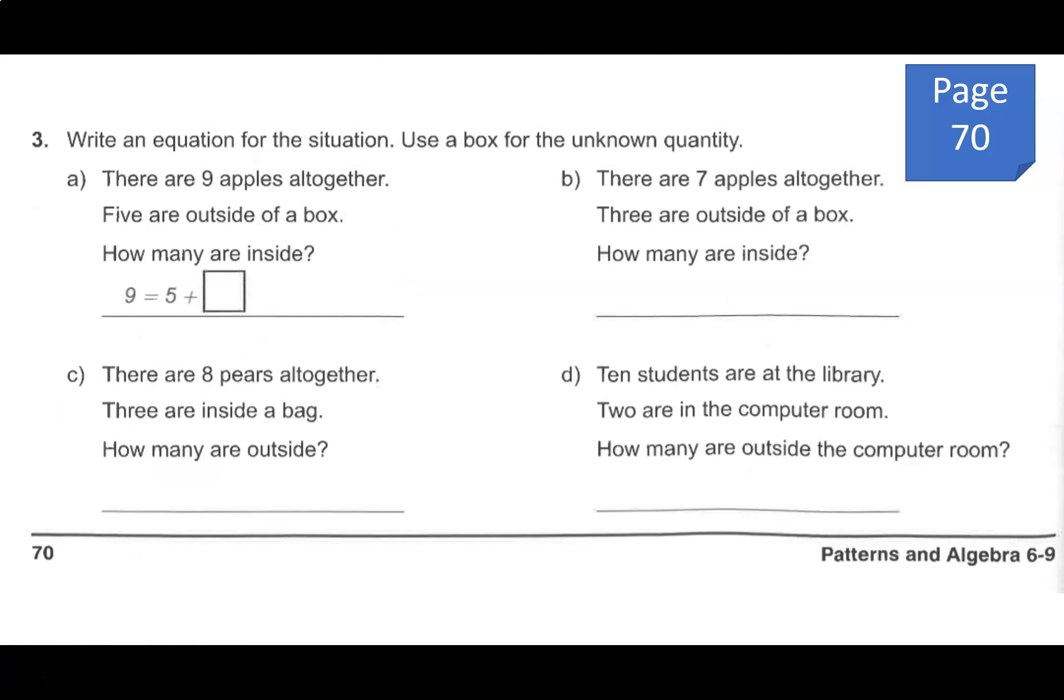Question 3 says, write an equation for the situation. Use a box for the unknown quantity. Remember, an equation is just like a math sentence or a math statement. Let's read A. There are 9 apples altogether. 5 are outside of a box. I'm going to draw a box. I'm going to draw 5 apples outside of a box. How many are inside? Well, if 5 are outside, then we have 6, 7, 8, 9. That means that there are 1, 2, 3, 4 apples inside the box. So our equation is 9 equals 5 plus 4. I would like you to try B, C, and D.